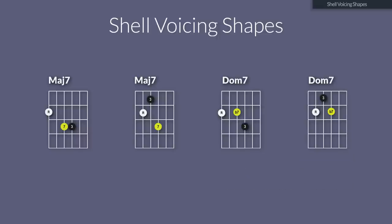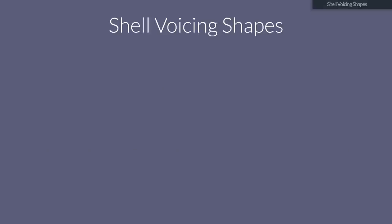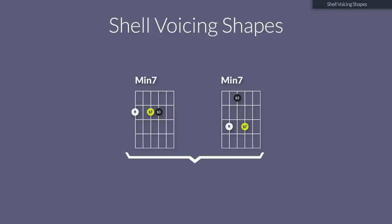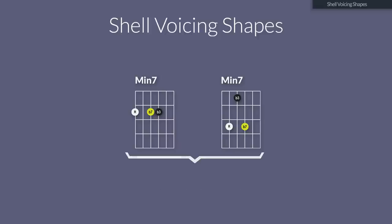Now the minor 7 shapes have a root on the 5th and the 6th string. In addition to the root, there's a minor 3rd and a minor 7th degree. Because there's no 5th present in shell voicings, this minor 7 shape can also be used for half diminished chords, also known as the minor 7 flat 5 chords. This shape is also suited for minor 9, minor 11, minor 13, minor 7 sharp 11, and minor 7 flat 13 chords. As long as the chord is minor, the shell voicing works.